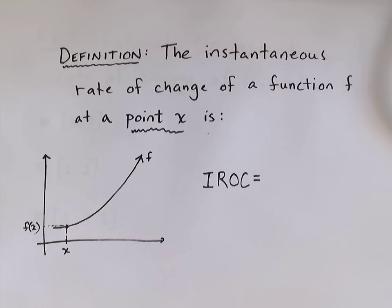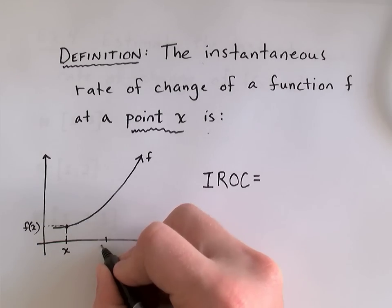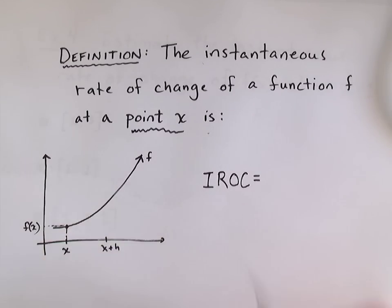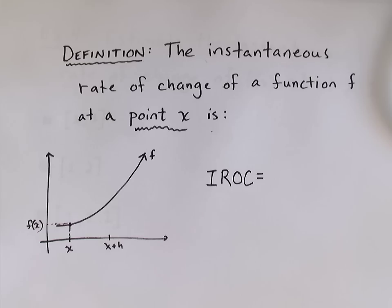And the way we go about this is first we look at it over an interval. But instead of calling the interval from a to b, I'm going to say it's an interval from x to x plus h. See, a and b are just completely independent of each other. But when I call the interval x to x plus h, this gives me some control of the width of the interval. I can call the width of that interval h.